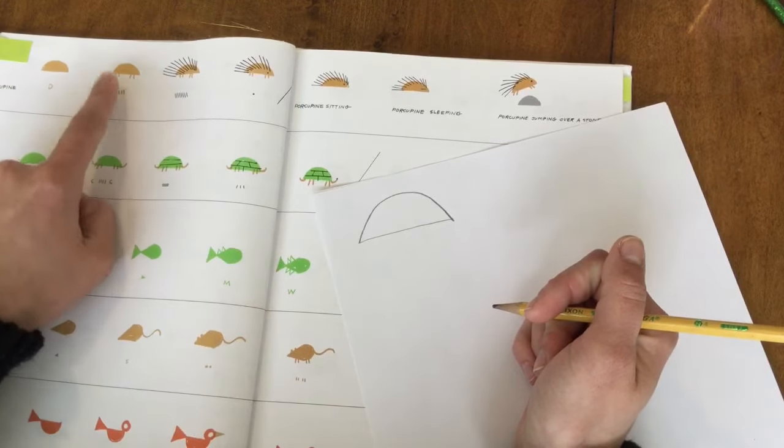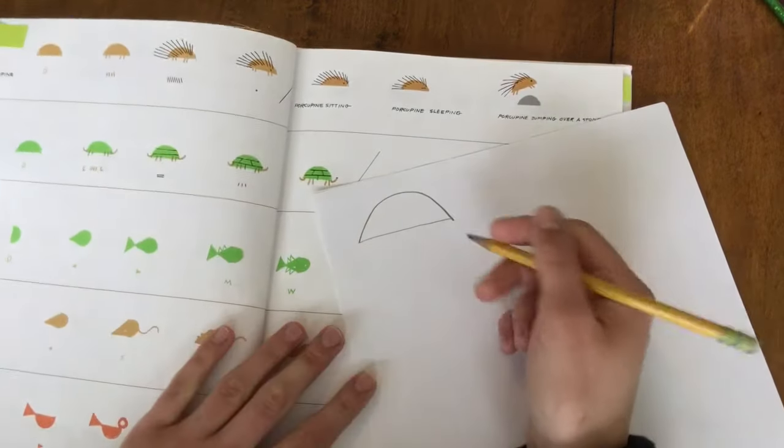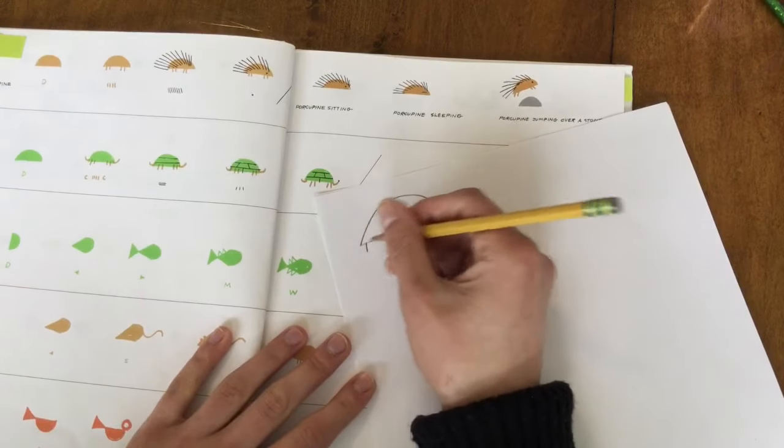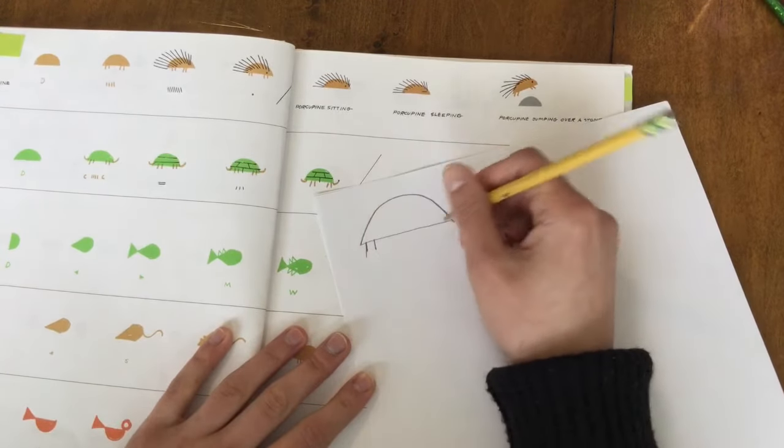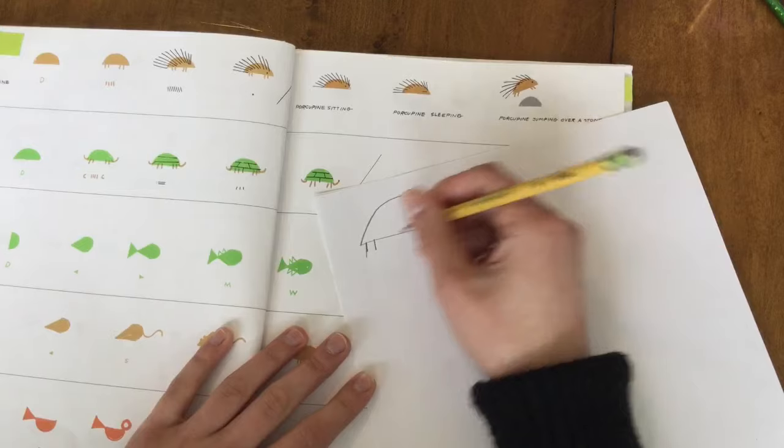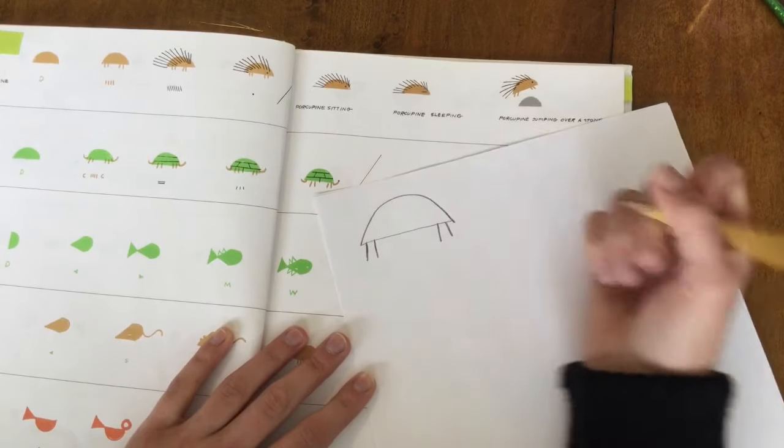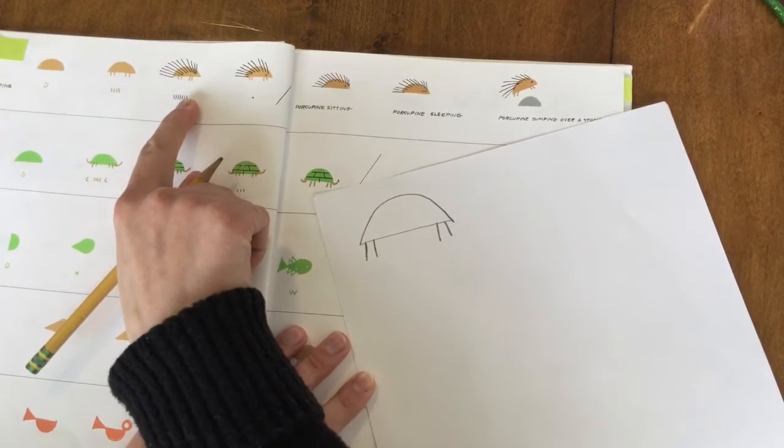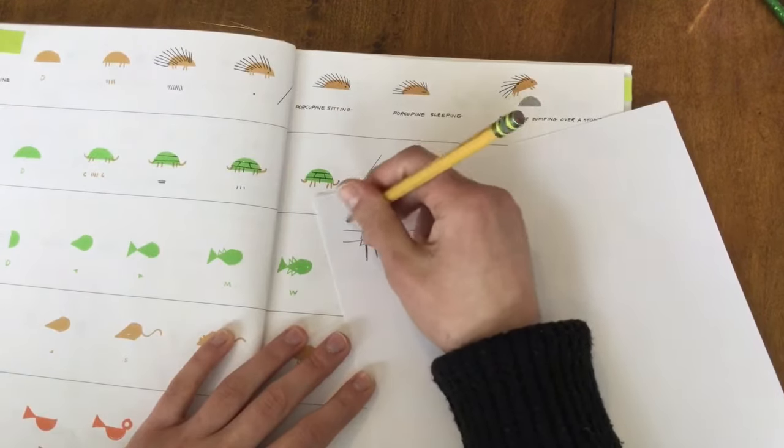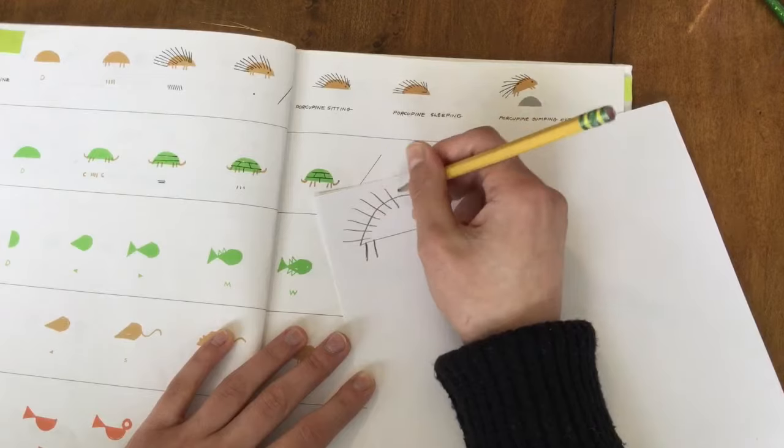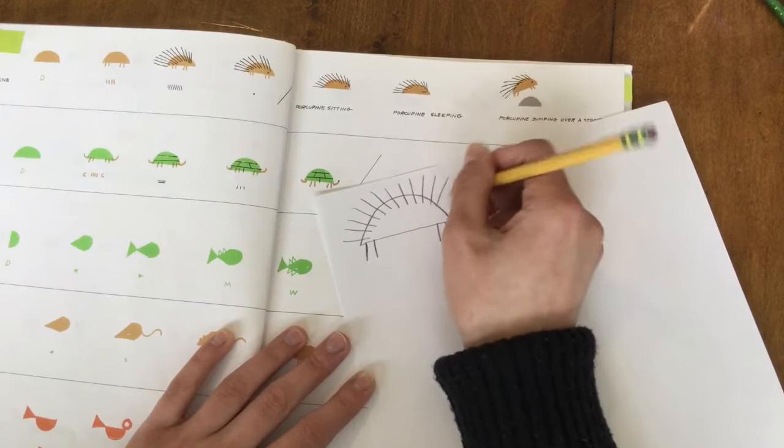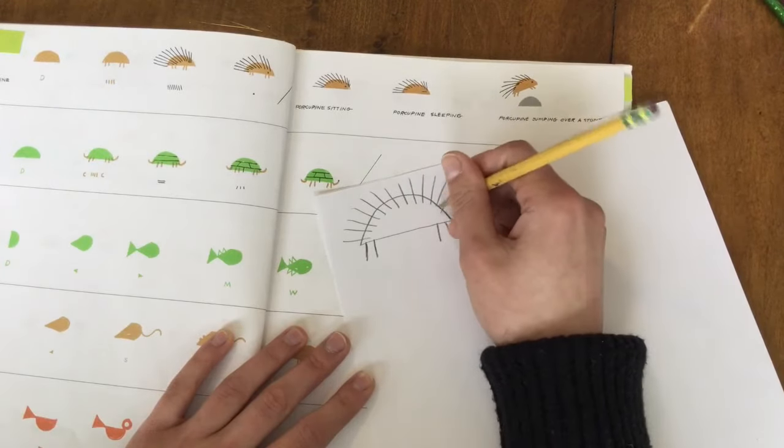The next thing we need to add are the legs and he uses simple straight lines for his legs. A porcupine has four legs: one, two, three, four, and I'm going to make mine all the same size. Then he draws the porcupine spikes on his back. So you can go ahead and draw big straight lines that go across the porcupine's back. I'm going to make them go all the way to the top.